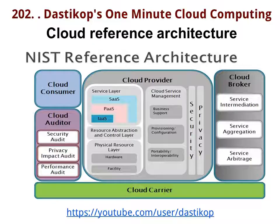The first one is cloud consumer, the second one is cloud provider, the third one is cloud broker, and the fourth one is cloud auditor. Cloud consumer is anybody like us — an individual or an institution who will be using cloud computing services. Cloud provider is somebody who actually produces those resources and gives it to the end user.